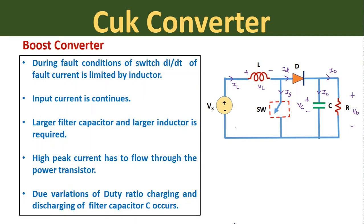Next we will discuss the merits and demerits of the boost converter. First point: during fault conditions of the switch, dI/dT of the fault is limited by the inductor connected at the input side. Whenever a fault occurs in switch SW during the ON condition, heavy current flows through the switch to ground, and this inductor limits that heavy fault current. Second point: the input current is continuous in the boost converter. During the ON condition of SW, the inductor smooths the input current, and during the OFF condition the input is connected to the load, so the input current is always continuous.